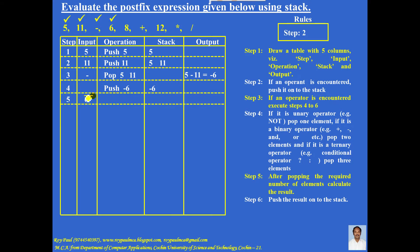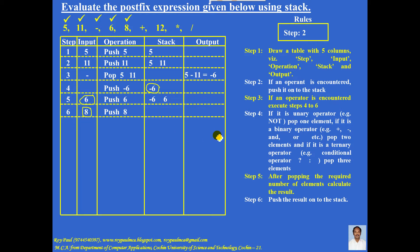The next input is 6 — it's an operand, so push it onto the stack. Minus 6 is still there and 6 is added. The next input is 8 — it's an operand, so push it onto the stack. The stack now contains minus 6, 6, and 8.